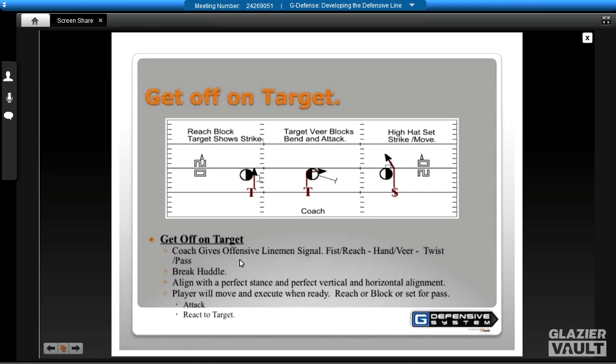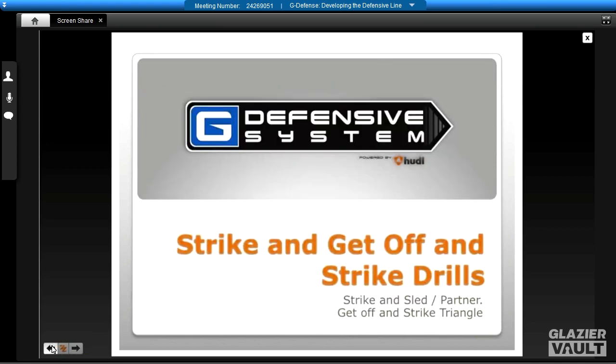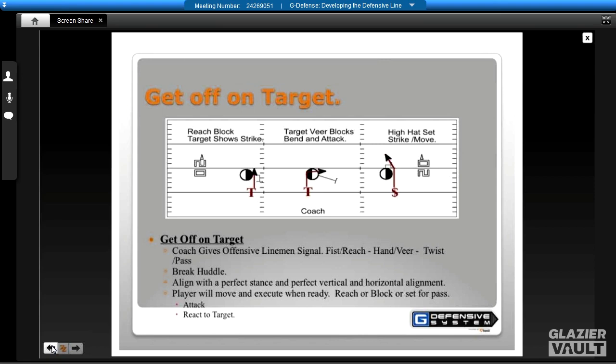Here's the drill. Coach gives the offensive line a signal. Fist means reach. An open hand means bear. And a twist means pass set. So the coach is over here. He gives each lineman their signal. We go one at a time. We align with perfect stance, perfect alignment, and the player will move, and they'll execute when they react to the movement. Fellas, this is what the game comes down to. We talk about this all the time. We want to attack the target. If the target shows, strike the target, play hips in gap. If the target of the man disappears, bend. It's that simple for defensive line. And if you can get your kids to do that, they can play fast. When they get the high-hat, they'll press it and start in their move.